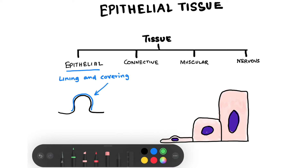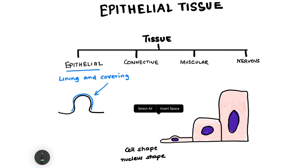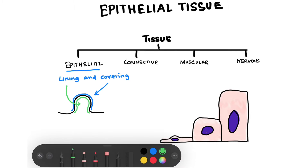If the interior hollow area of the same body part is covered by epithelial tissue, then the internal presence of epithelial tissue is known as lining. So lining means to cover from the interior, and covering means to wrap from the outside. This is the main function of epithelial tissue.